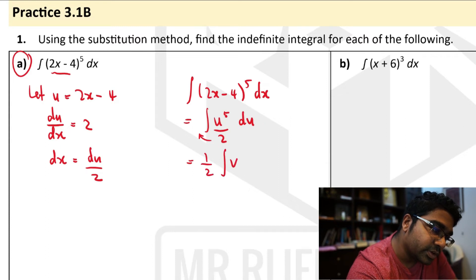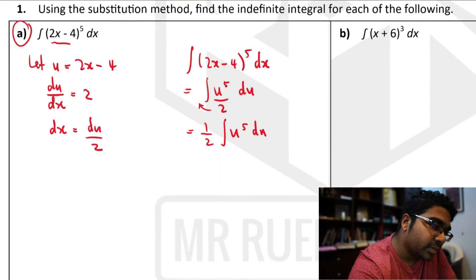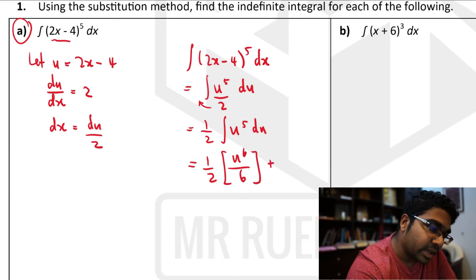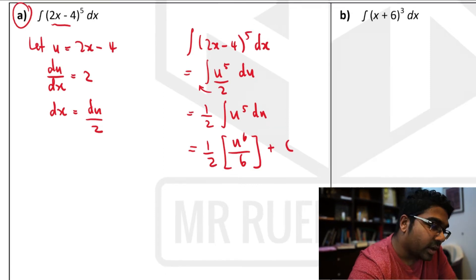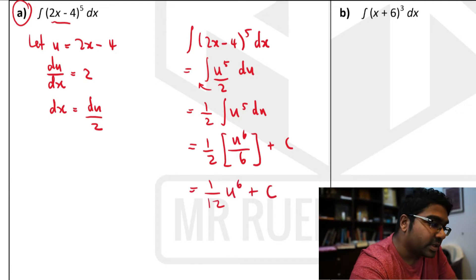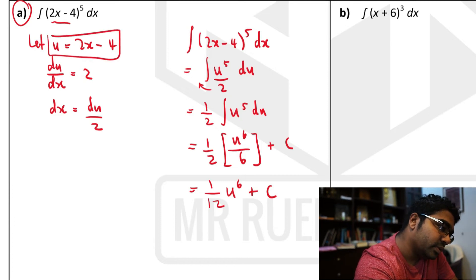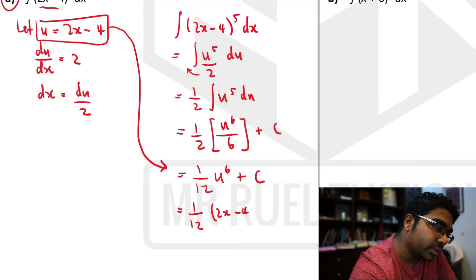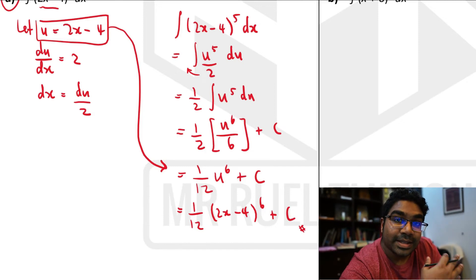Once again, the constant we can leave outside the integral: 1 over 2 times the integration of u to the power of 5 du. Here we get 1 over 2 times u to the power of 6 over 6. Don't forget plus c because this is an indefinite integral. The answer is 1 over 12 times u to the power of 6 plus c. Substituting back the expression for u, that will be 1 over 12 times (2x minus 4) to the power of 6 plus c. This is how we use substitution.